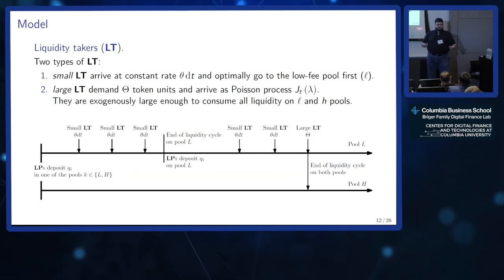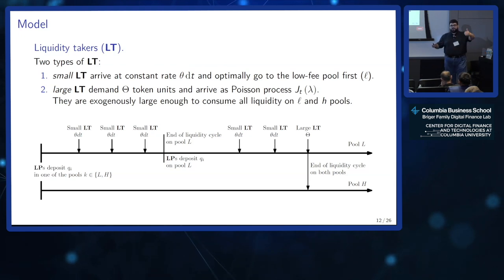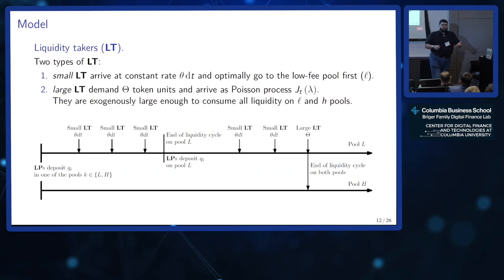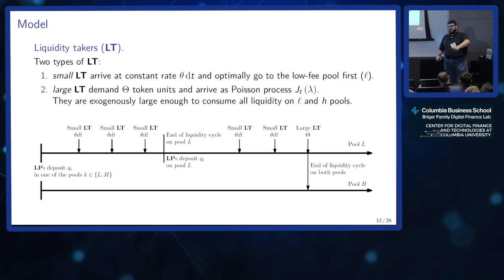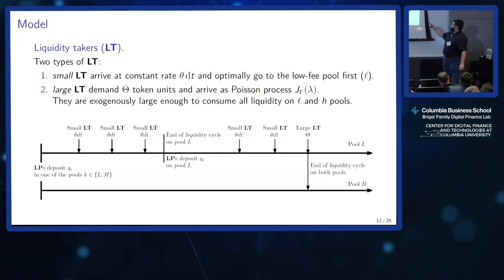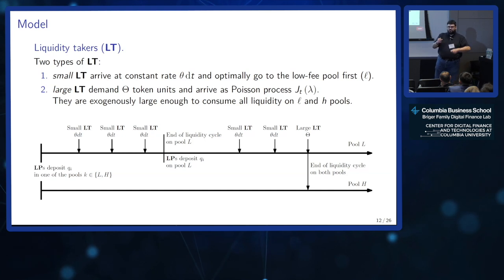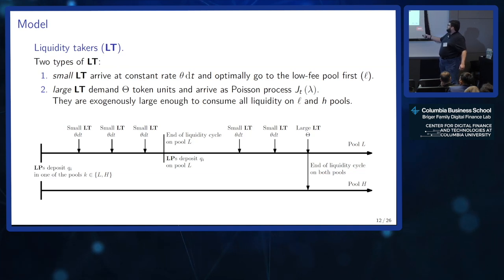On the other side of the market are liquidity traders, coming in two flavors. There's a flow of small liquidity traders arriving at a constant rate theta — very small, they can't impact the market and will optimally go to the low-fee pool where their transaction cost is lowest. From time to time, with a Poisson process with intensity lambda, a huge trader arrives and basically consumes liquidity on both pools. This leads to the creation of liquidity cycles.